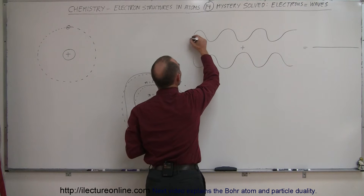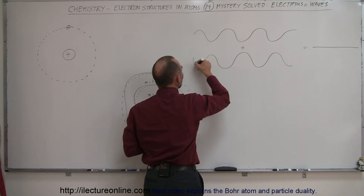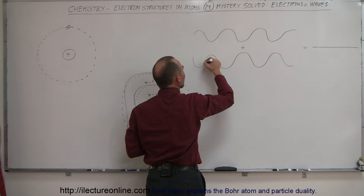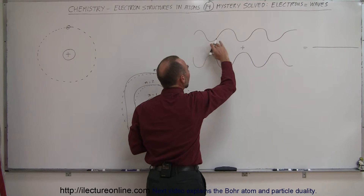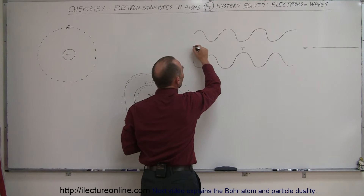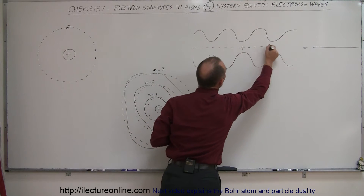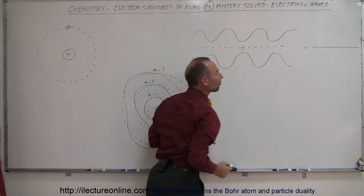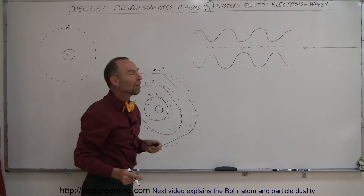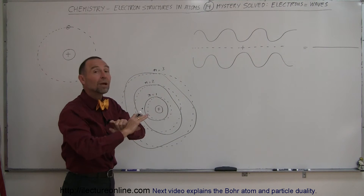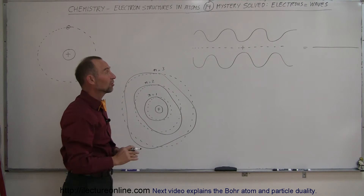When this wave has a maximum in this direction, this one has a minimum in this direction. And when this one has a minimum here, this one has a maximum. So when you put the two together, you end up with a cancelled out wave — the two cancel each other out, and the wave ceases to exist.